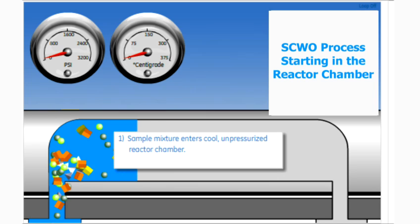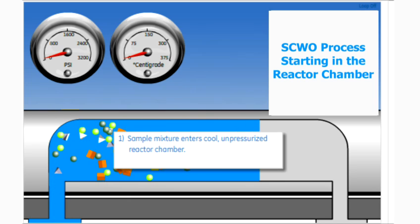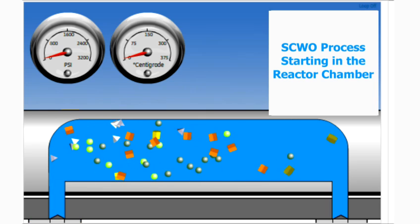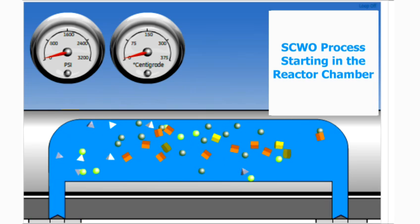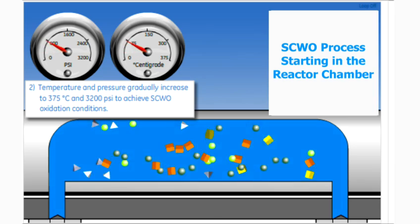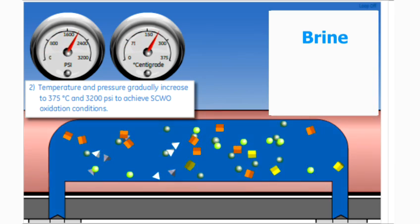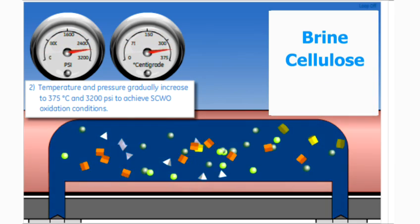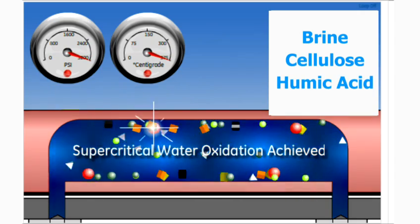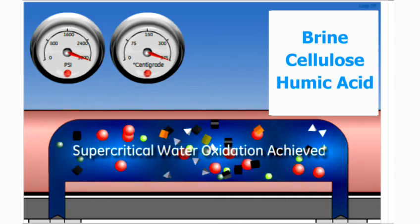The Innovox is robust. The SCWO technology uses elevated temperature and pressure to oxidize samples efficiently. You can run thousands of tough samples – including brine, cellulose, or humic acid – by simply replenishing your reagents as needed.